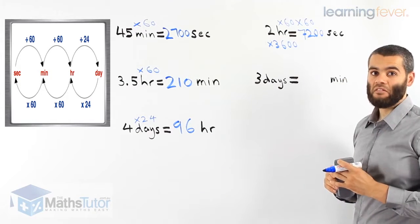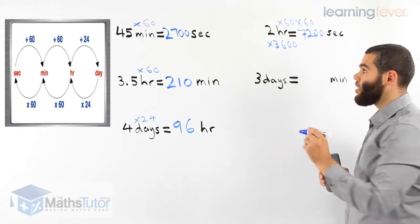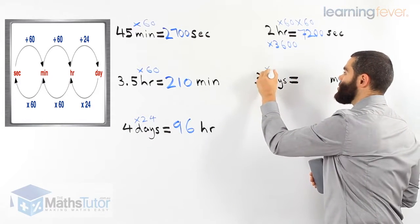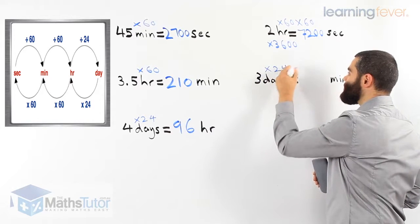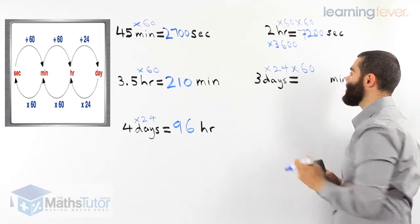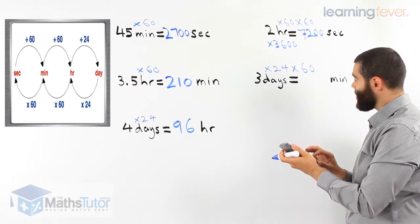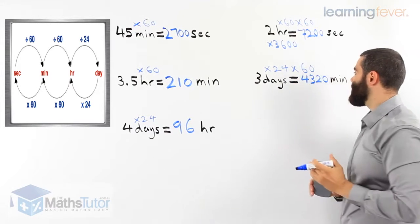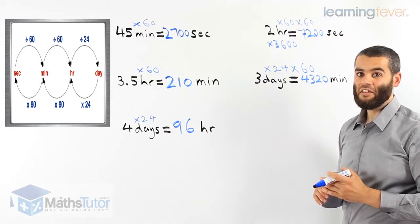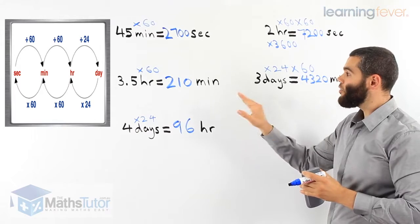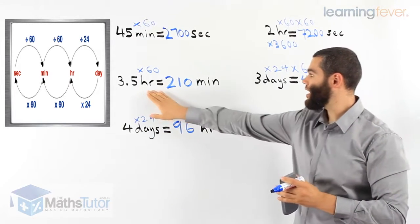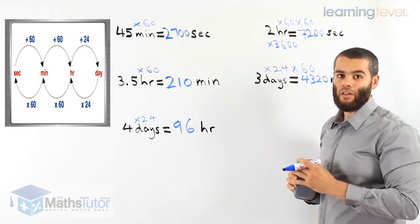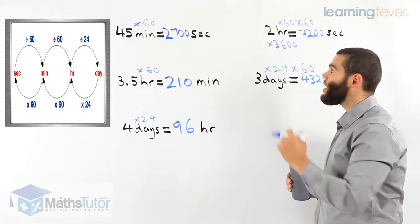From days to minutes — three days to minutes. We have to go through hours: days to hours then to minutes. Three times 24 times 60 gives 4,320 minutes in three days. As you can see, we are converting from a large unit to a small one. Now I'm going to show you how to go the other way around — from a small unit of time to a large unit of time.